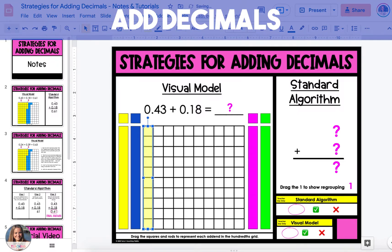In order to shade in 43 hundredths, stretch the rod so that it covers four of the columns, which is 40 hundredths, and then you can drag one of the squares or another rod and adjust the size to cover 3 hundredths of the next column.